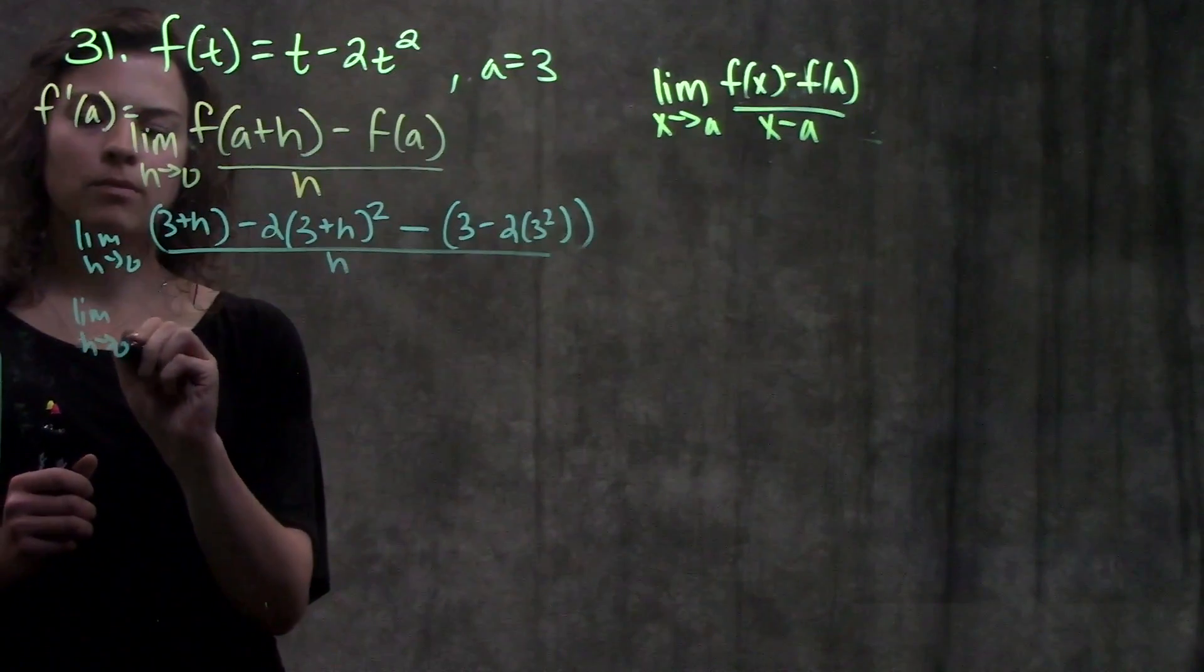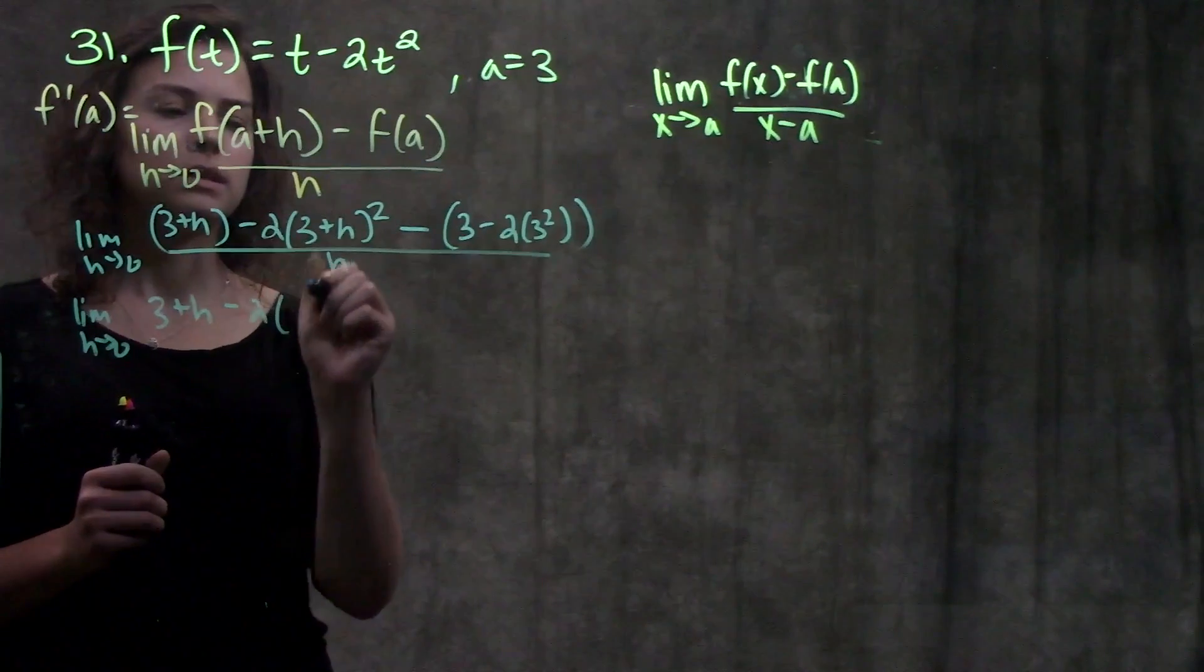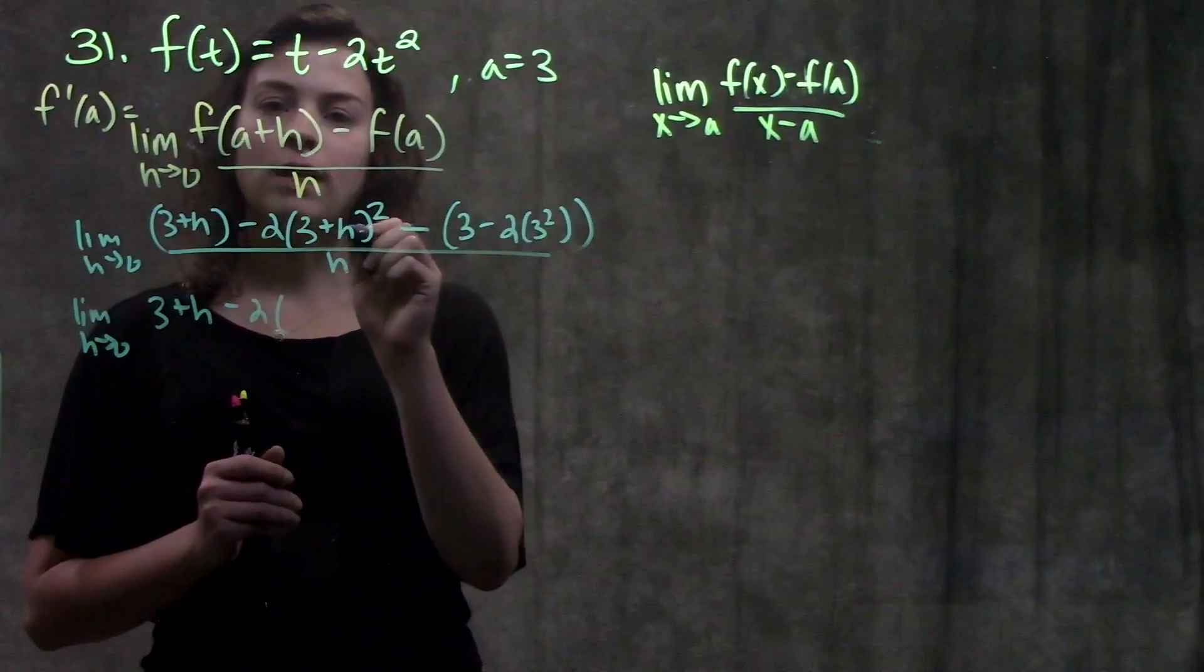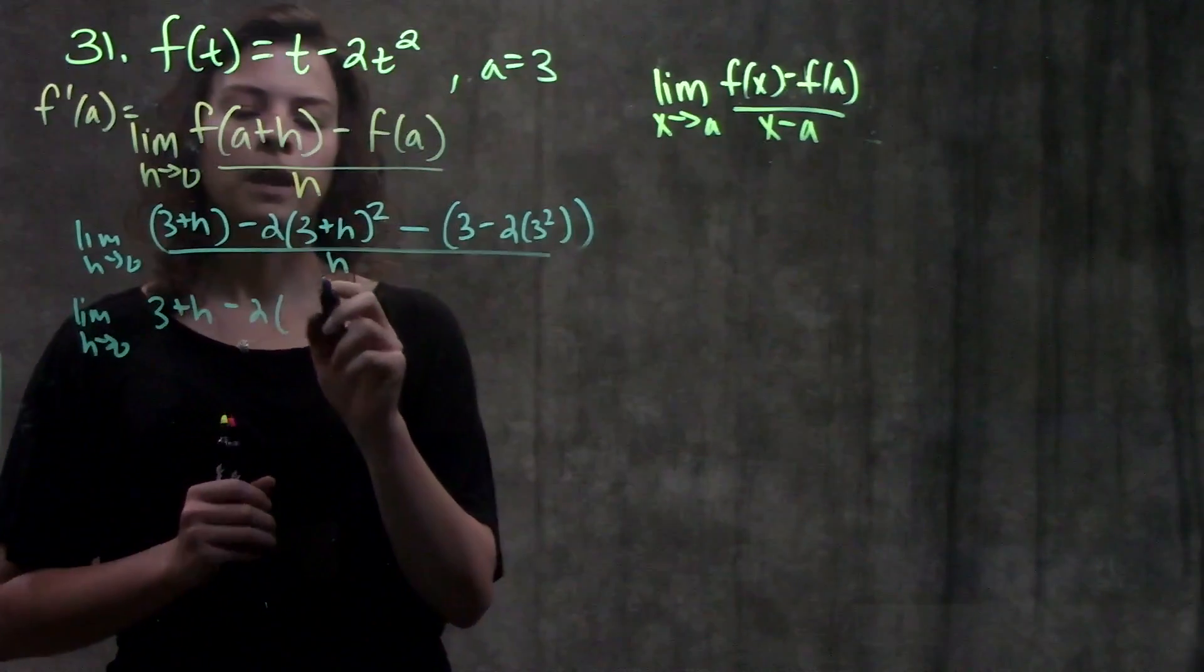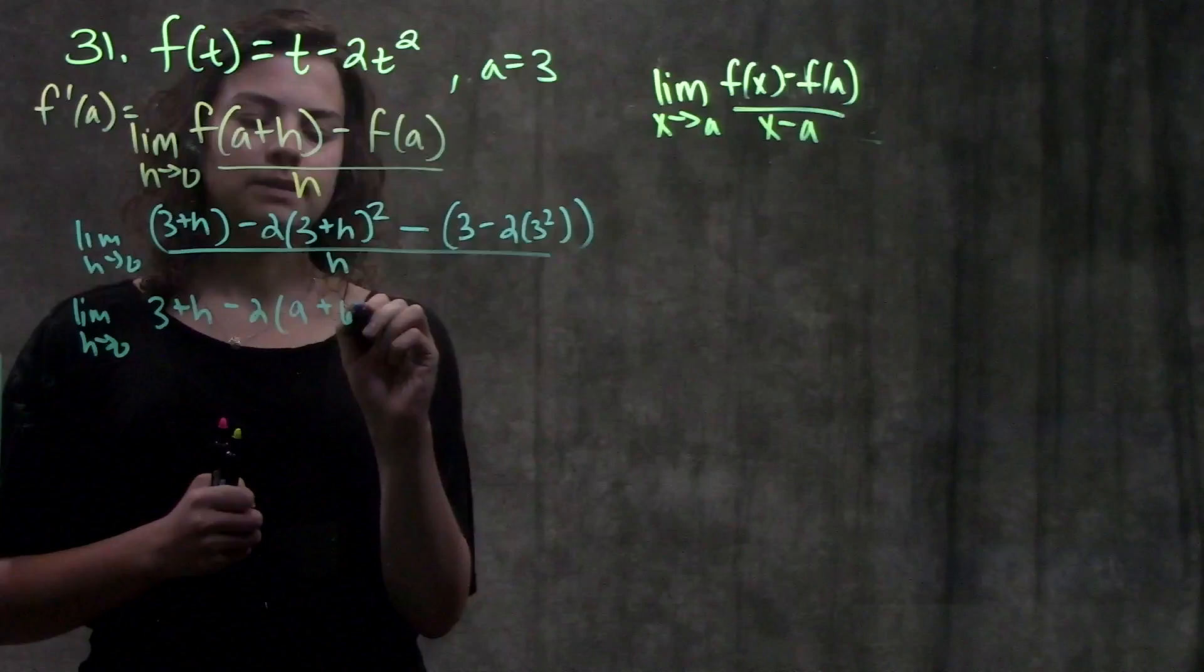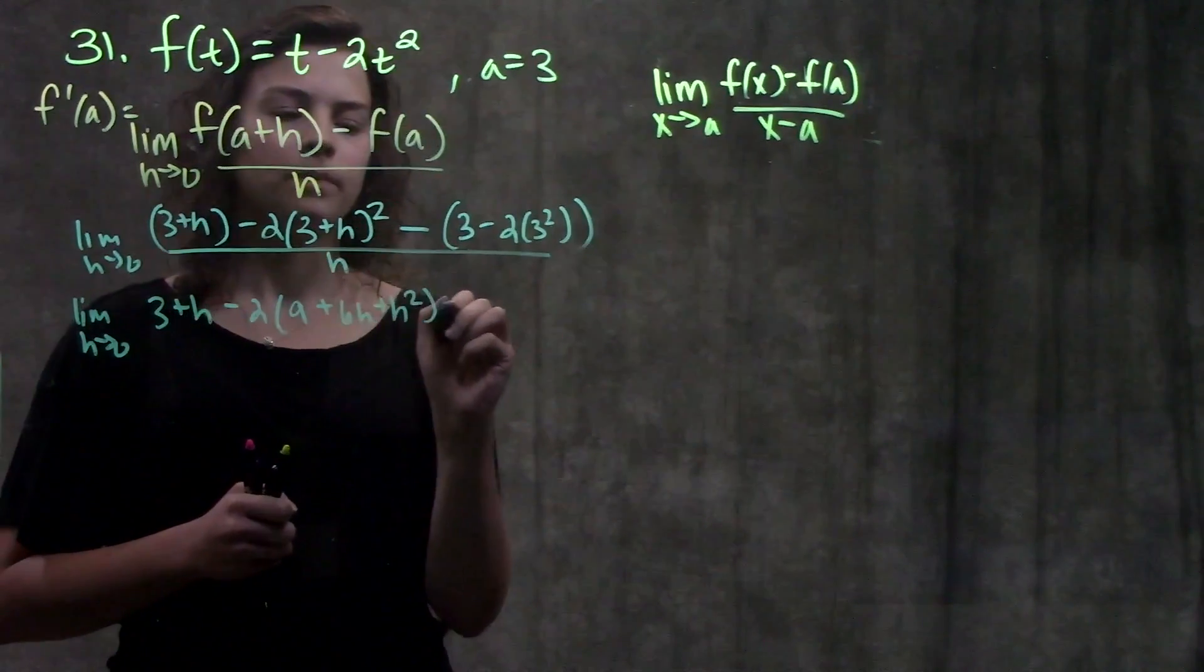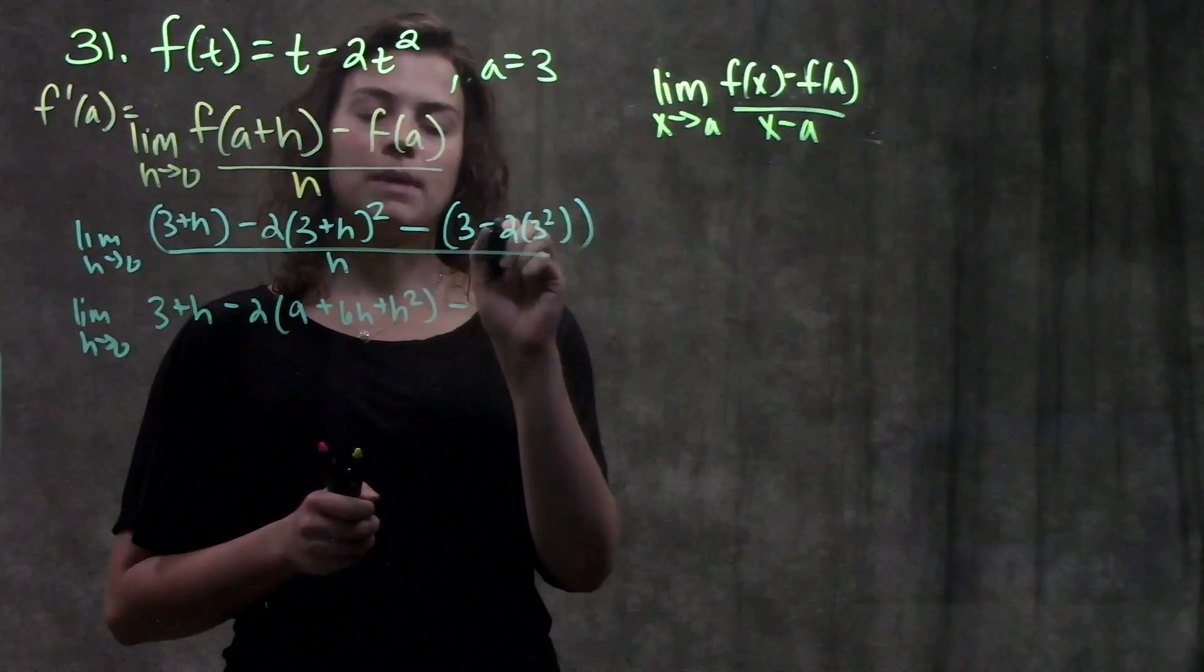Let's simplify this a little bit more. I have 3 plus h minus 2 times, when I multiply this out, I get (3 plus h) times (3 plus h) because it's squared. When I multiply that out, I need to FOIL it, and I get 9 plus 6h plus h squared. Minus, when I multiply all this out on the inside, I get minus 15. Remember, it's minus and negative 15, that'll become plus 15.